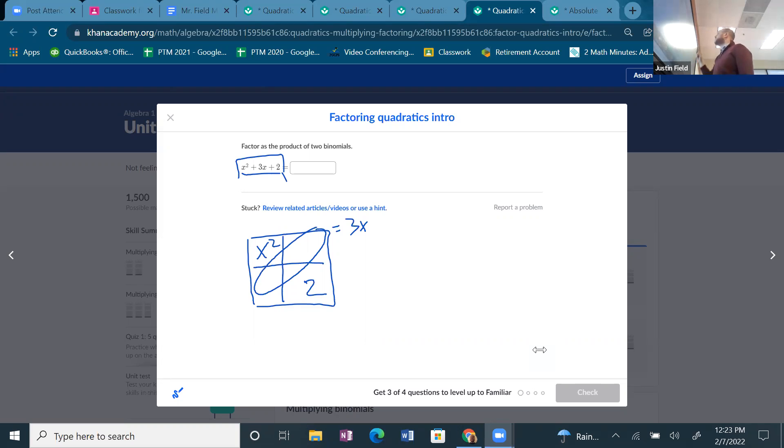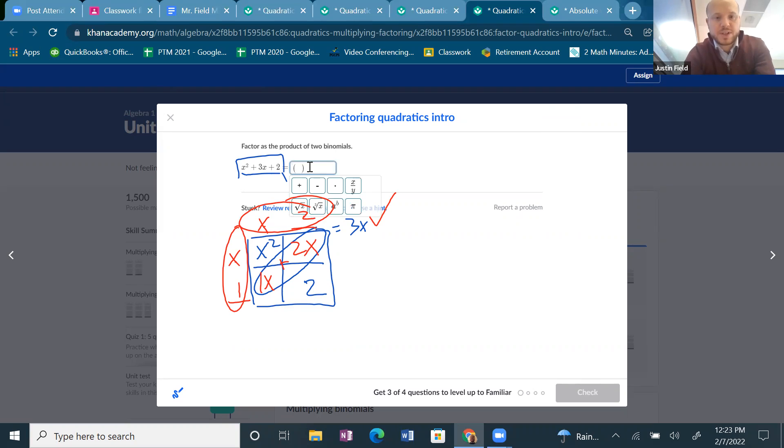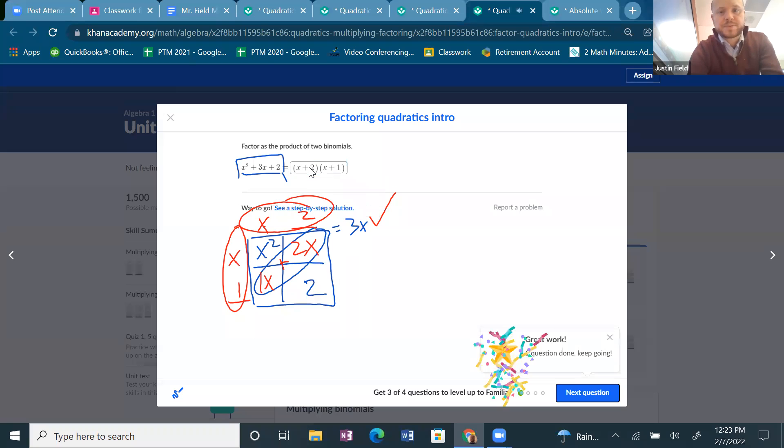Now, our goal is to figure out what goes on the outside. So, we know x times x gives us x squared. And what times what gives us two. There's only two options. Two times one. That gives us two. Now, let's fill in the box. So, x times one is one x. x times two is two x. And lo and behold, one x plus two x equals three. So, I know the answer to this question. It's x plus two, x plus one. All right. So, I'm going to write parentheses x plus two and parentheses x plus one. See that.